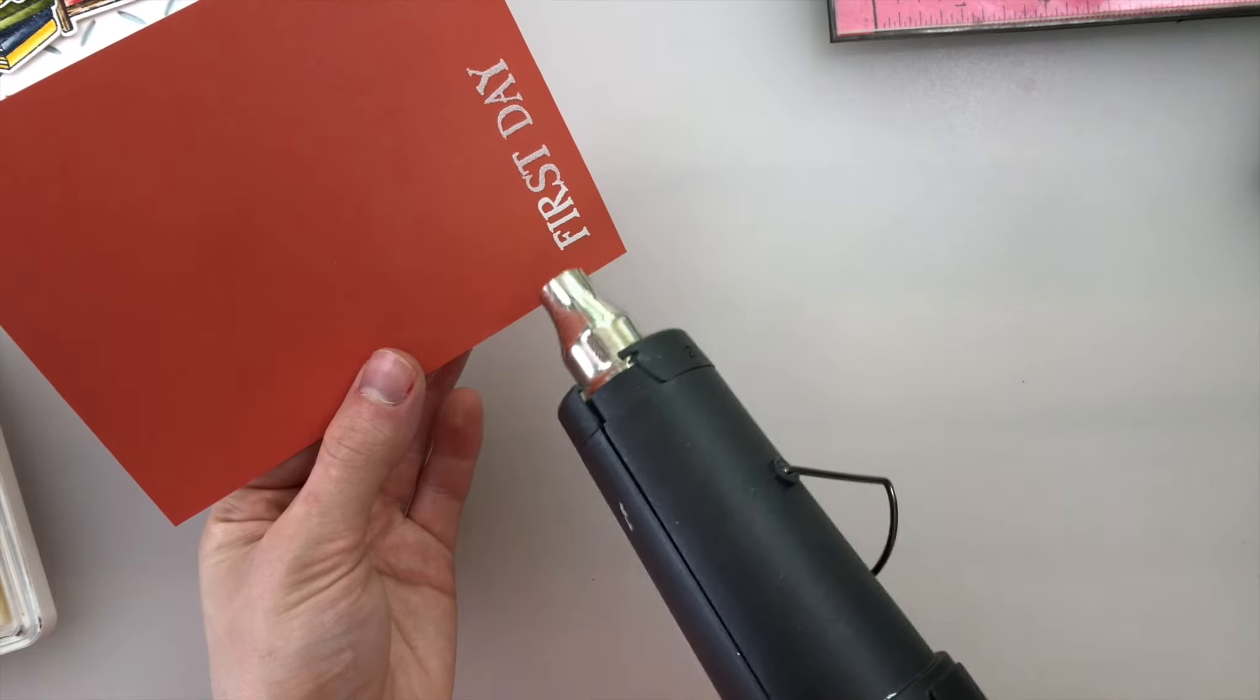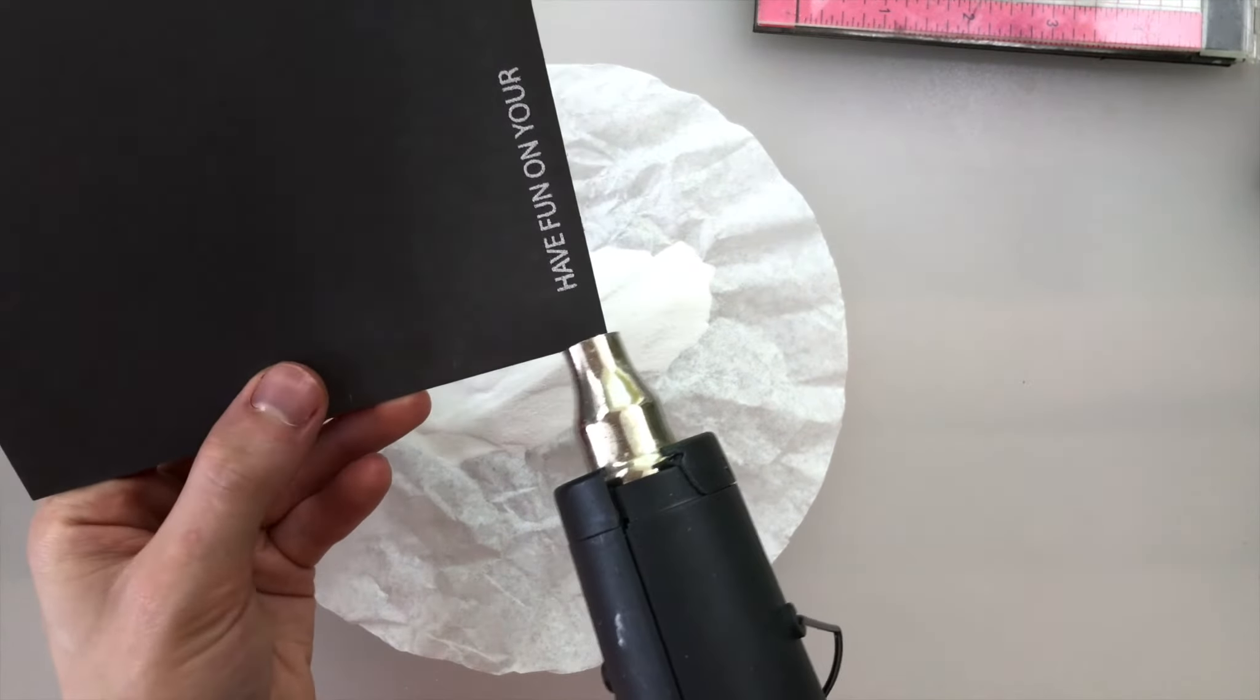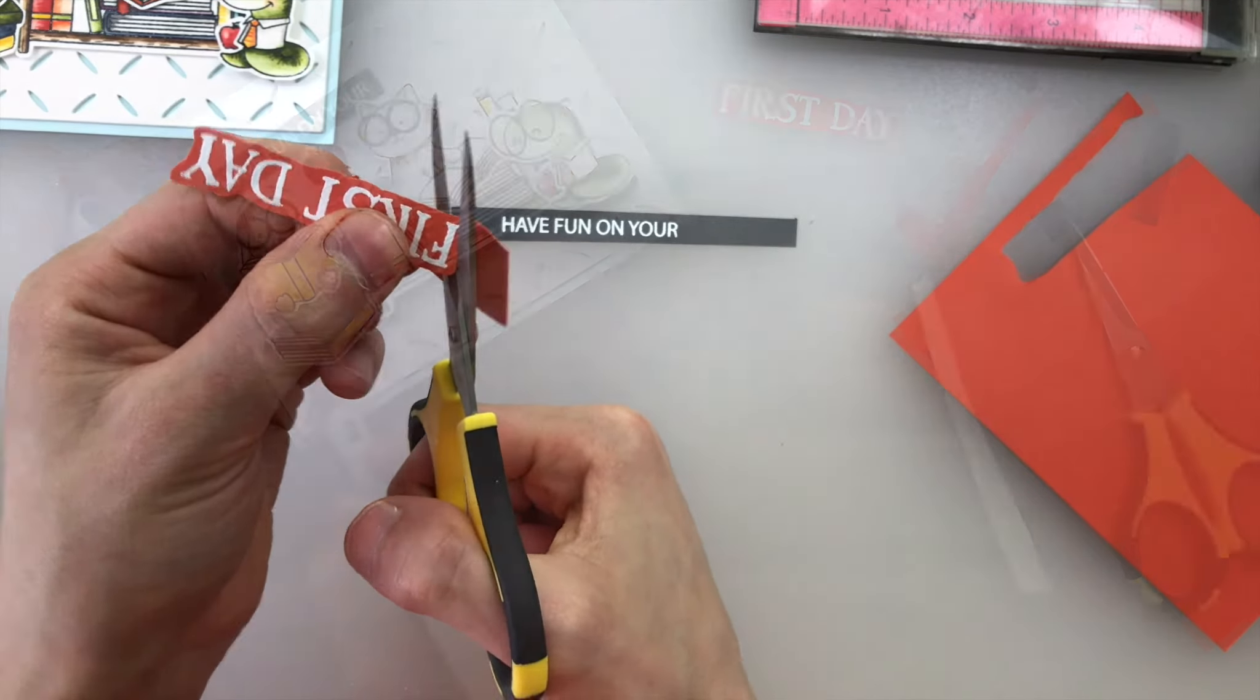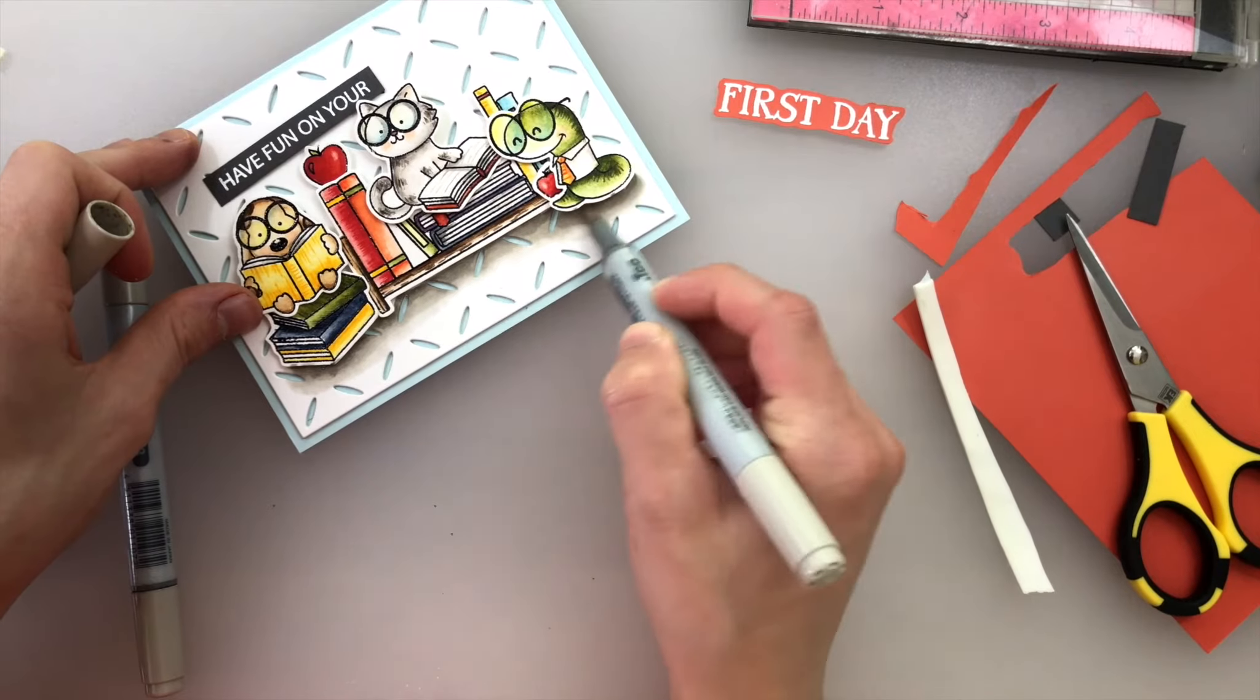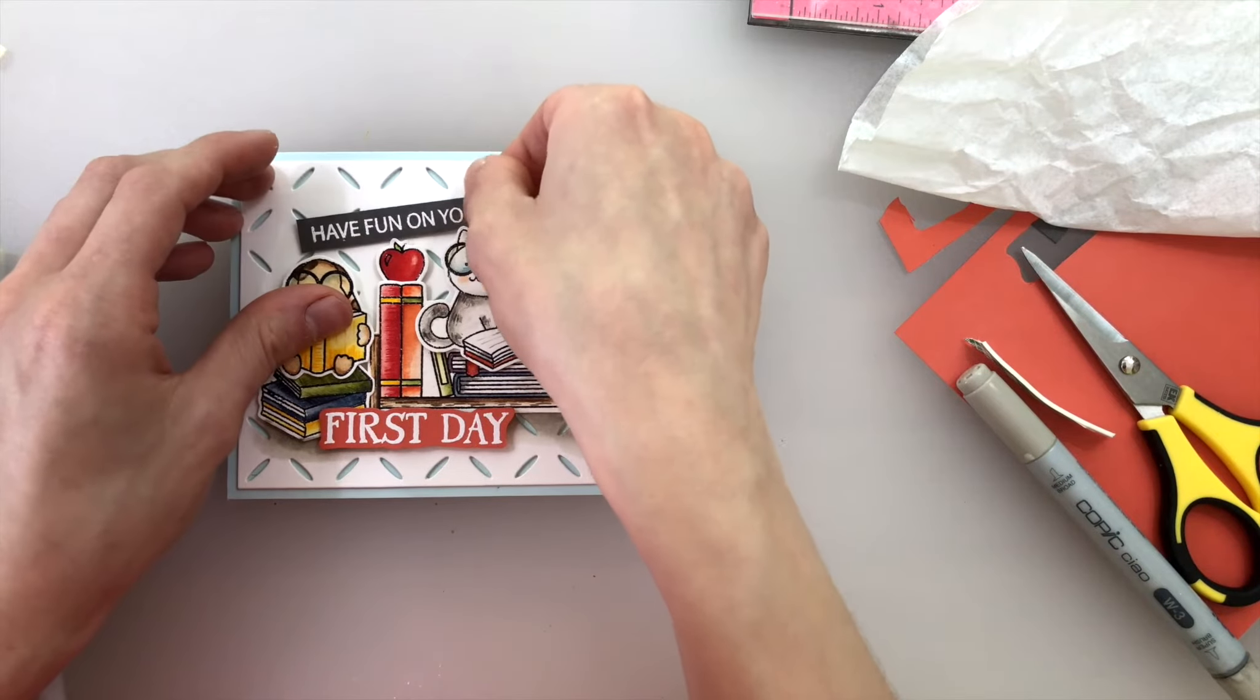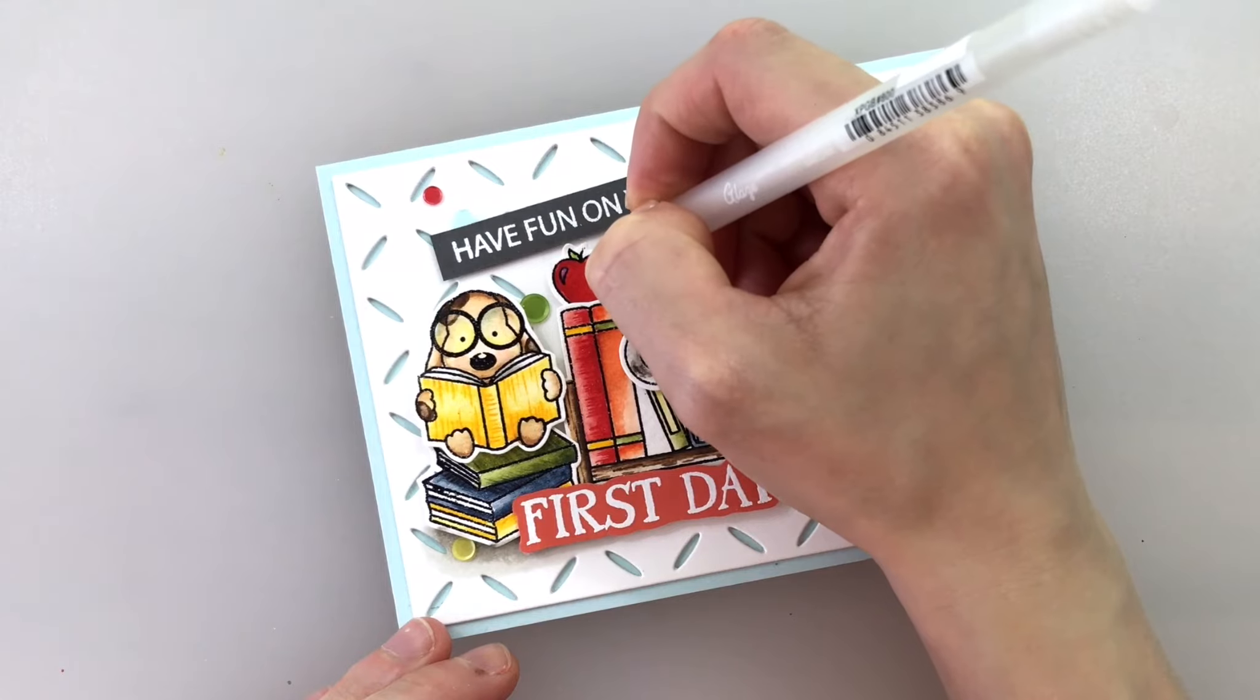Along with the critters I want to add some sentiments. I'm using our new Simon Says Stamp School Bus Messages stamp set and stamping out the greeting have a great first day. This is a great card to give to one of your kids or grandkids to start off the school year and give them a little bit of encouragement. I'm stamping each of those sentiments onto colored cardstocks with white embossing powder and I will cut the first day sentiment out with some scissors but then the other sentiment I'll just cut down into a little banner. I did add a little bit of shading with a couple of Copic markers underneath of my critters and my sentiments are popped up off of the card with foam tape.